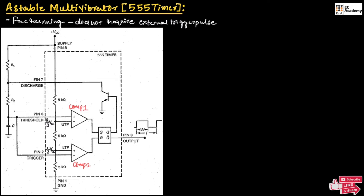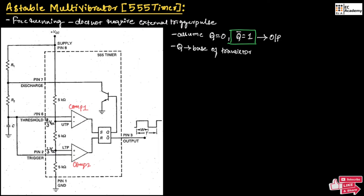Initially, let us assume in the SR flip-flop Q is equal to 0, then Q bar will be equal to 1. So this 1 will appear across the output, meaning the output will be in a high state. Since Q is connected to the base of the transistor, the transistor will be cut off.